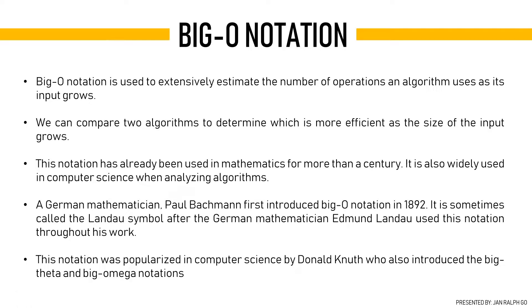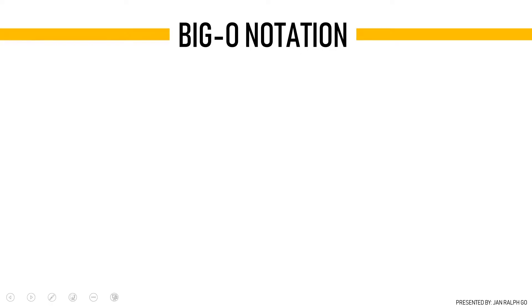This notation has already been used in mathematics for more than a century. It is also widely used in computer science for analyzing algorithms. The German mathematician Paul Bachmann first introduced big O notation in 1892. It is sometimes called the Landau symbol, after the German mathematician Edmund Landau used this notation throughout his work. This notation was popularized in computer science by Donald Knuth, who also introduced the big theta and big omega notations, which will be discussed later in this video.